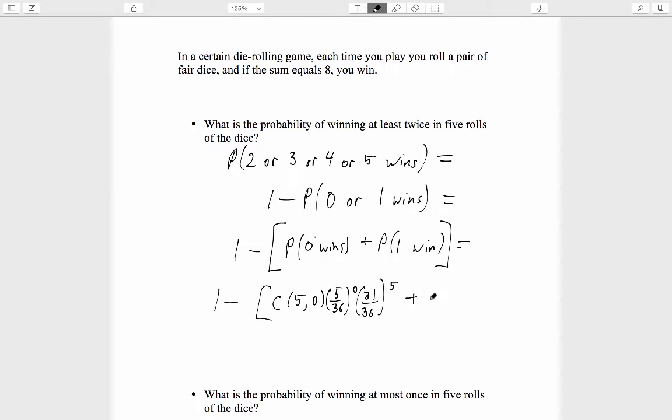Plus the probability of 1 win. That's 5 choose 1, times the probability of a win on a single roll raised to the 1st, times the probability of failure on a single roll raised to the 4th. 1 minus this whole sum is the probability that we're looking for.